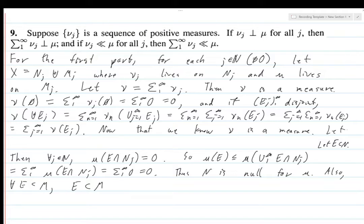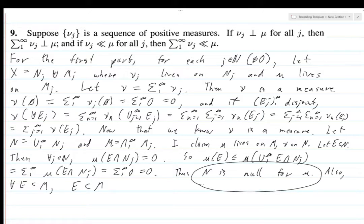Let N equal the union from 1 to infinity of the N_j and M equal the intersection from 1 to infinity of M_j. I claim that mu lives on M, nu on N. So that's what we're trying to prove here and basically we've started that by proving that N is null for mu so mu must live on M.